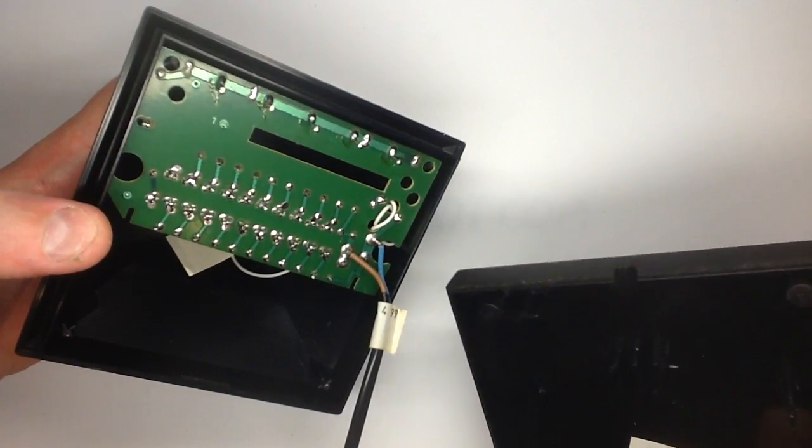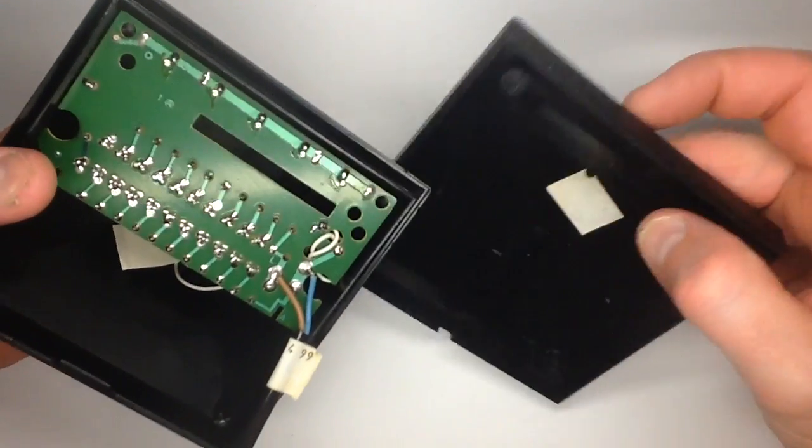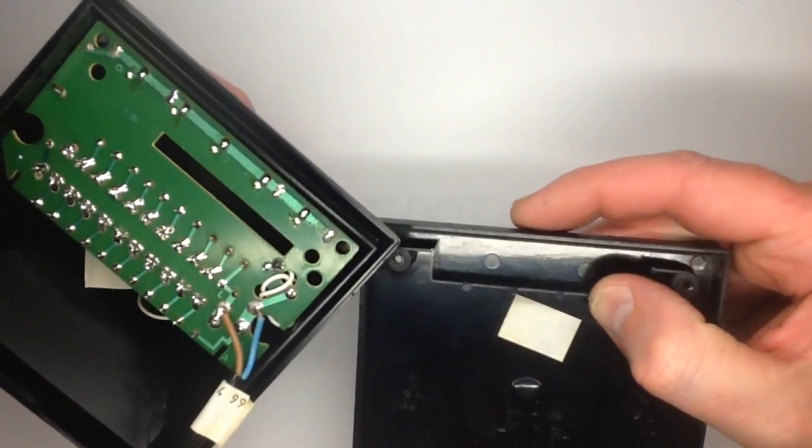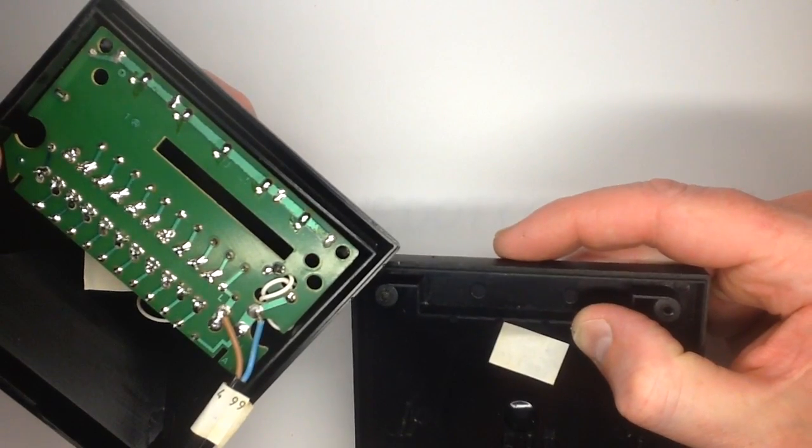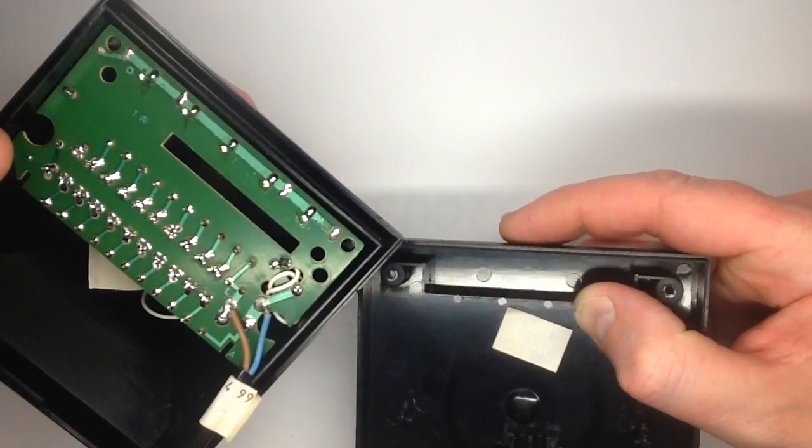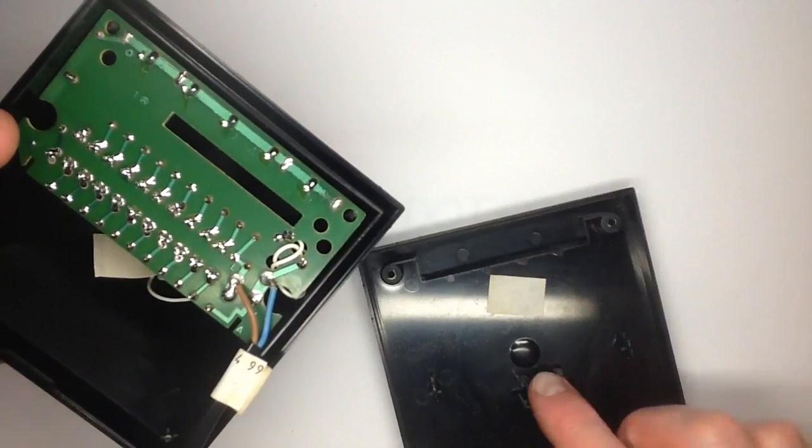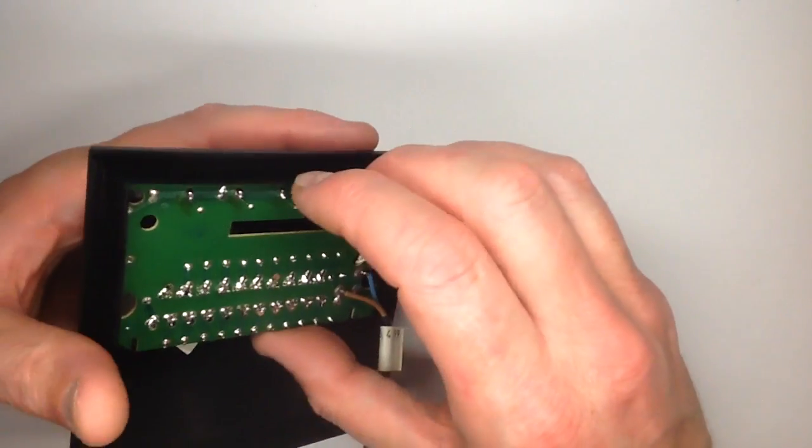There's a little bit of tape there. Oh it's had a label on it. Is that a date label? 3499, so it must have been made in 1999 I'm guessing. It's got the strain relief built in and the circuit board here.